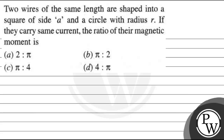Let's read this question. It says: two wires of the same length are shaped into a square of side a and a circle with radius r. If they carry the same amount of current, then find the ratio of their magnetic moments. So we need to find the magnetic moment. Our key concept is magnetic moment.